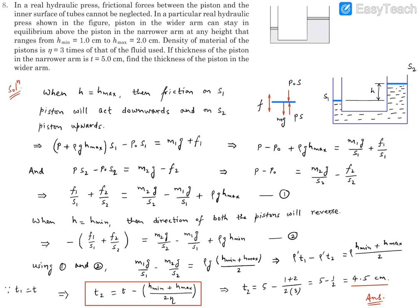Let's say this piston has cross-sectional area S1 and this piston has cross-sectional area S2. When H is maximum, the height gap is maximum, meaning the pressure at the base of S1 is maximum. When the pressure just below piston S1 is maximum, the pressure force is at its maximum value, so this piston will have a tendency to move up. Since piston S1 tends to move up, the friction due to the walls on this piston acts vertically downward. So when H is max, friction on the S1 piston acts downward.